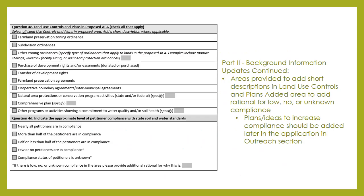Additional updates to Part 2 Background Information include updating our checklist for land use controls and plans to provide additional space to add information and specific examples. In this section, it is important to include all of the different land use controls and plans located within the proposed AEA boundary. You can also use this section to comment on a control that has been considered but not adopted. For example, your town may have considered adopting zoning in a specific year but chose not to when the planning committee determined the town had a limited mix of land uses and minimal development pressures.